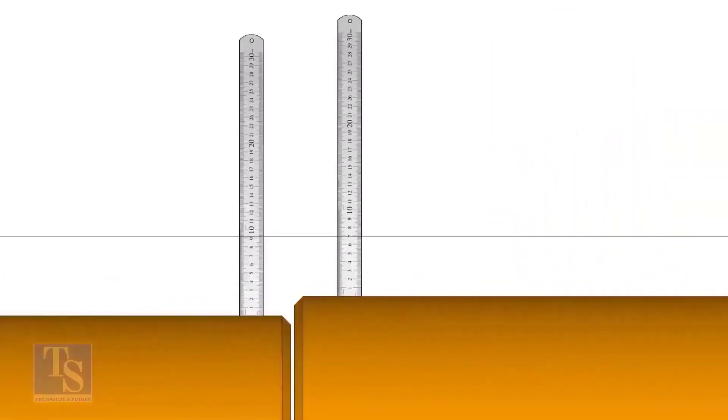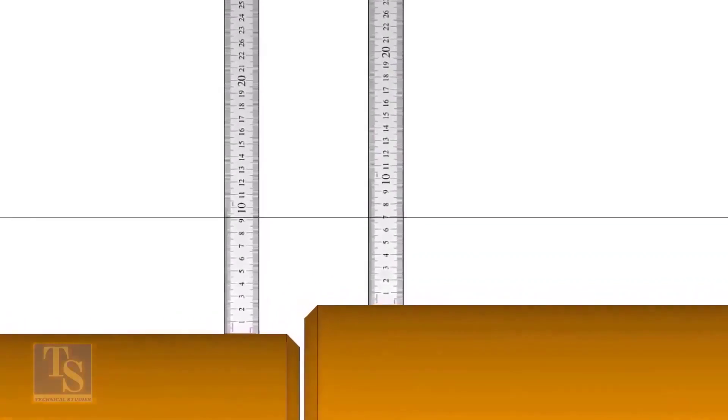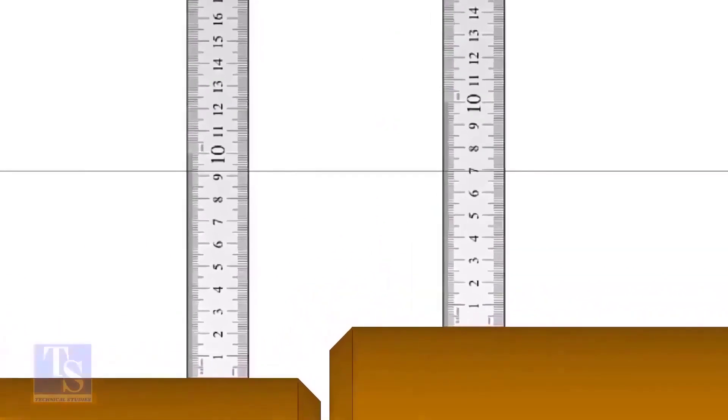If you find different measurements at the center as shown, add or remove packing plates below the roller to maintain the equal measurements.